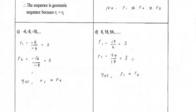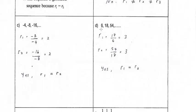Another example: 6, 18, 54. 18 divided by 6 is 3, and 54 divided by 18 is also 3. Since the sequence has a common ratio, yes, this is a geometric sequence.